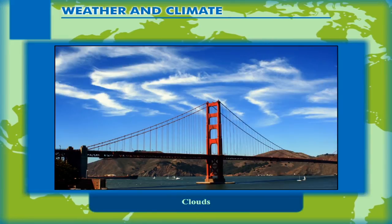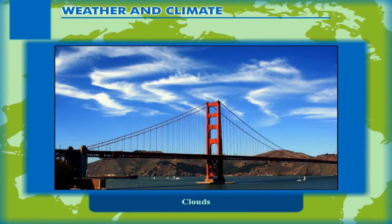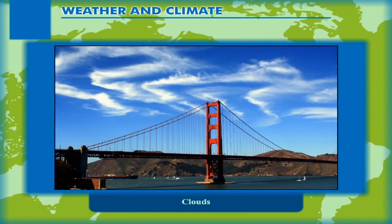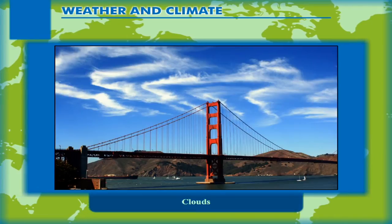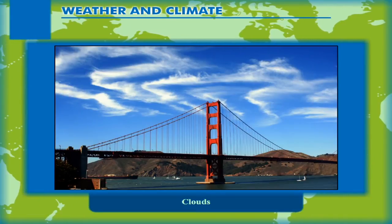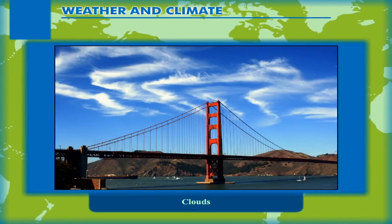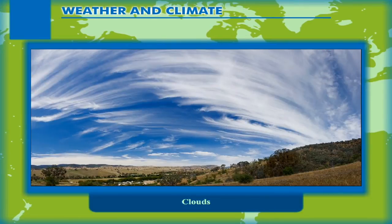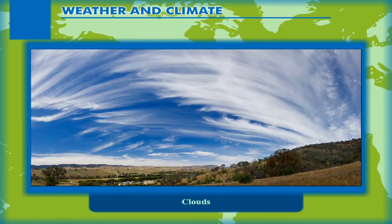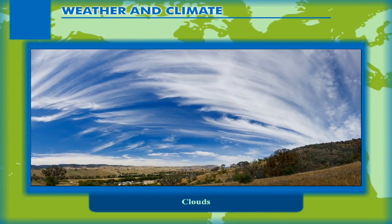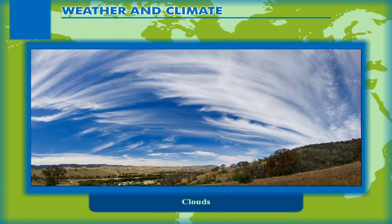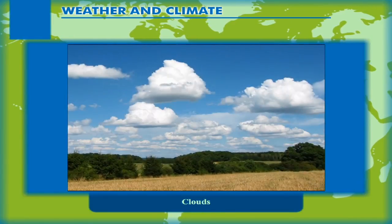Cirrus clouds are feathery and fibrous clouds found at high altitude. They are thin and white or transparent in appearance. They show brilliant colors at sunrise and sunset and correspond to dry weather.